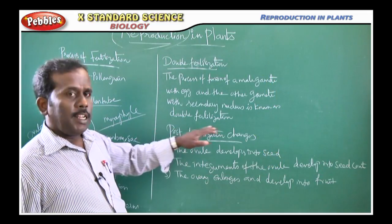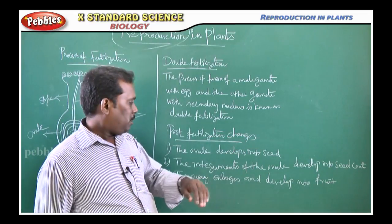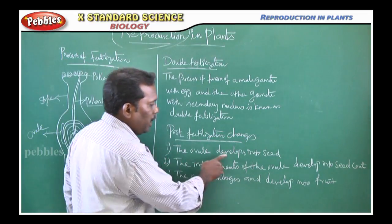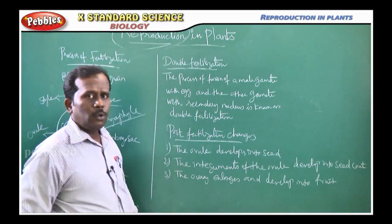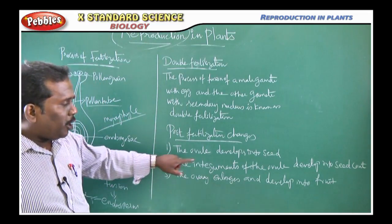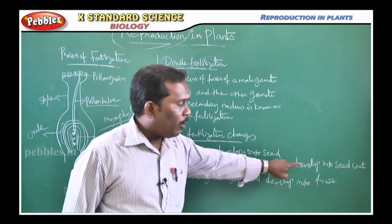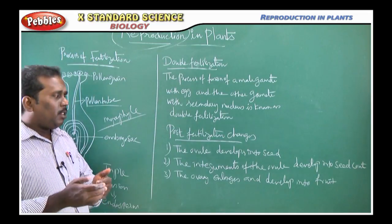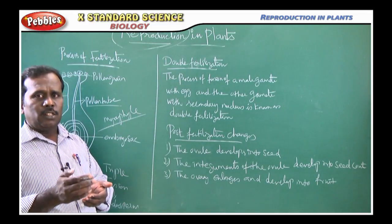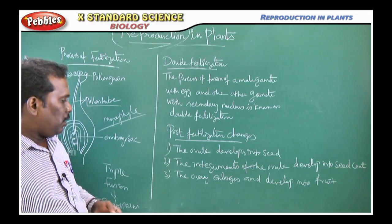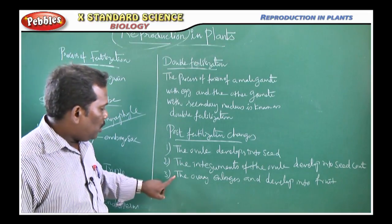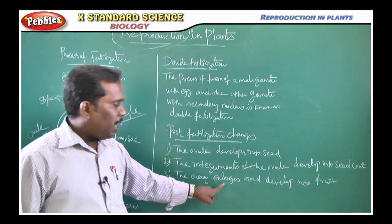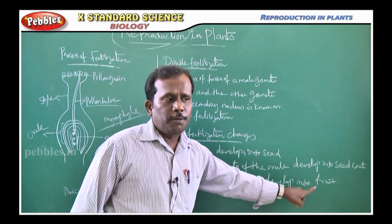Next are the post-fertilization changes. The ovule develops into a seed. The integument of the ovule develops into the seed coat. The seed coat is the outer layer of the seed. Then the third change: the fertilized ovary enlarges and develops into a fruit.